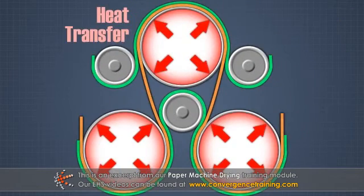Heat transfer occurs when the steam condenses inside the dryer can and gives up its latent heat to the inside surfaces.